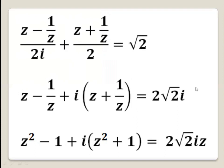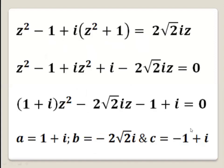Now we multiply the whole equation by z to get z squared minus 1 plus i times (z squared plus 1) equals 2 square root of 2 times iz. Expanding, we get i·z squared plus i, and taking terms to one side gives minus 2 square root of 2 times iz. So we have z squared plus i·z squared; taking z squared as common gives (1 plus i)·z squared minus 2 radical 2i·z, with constant minus 1 plus i.